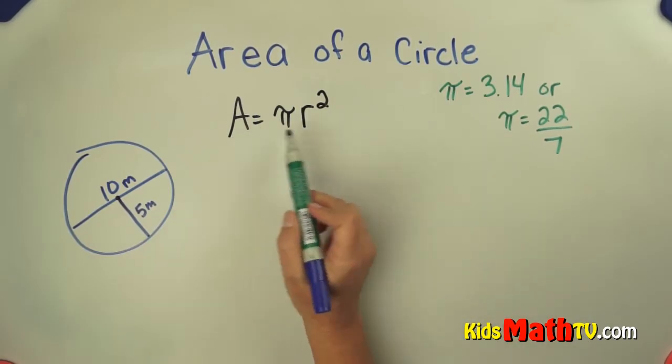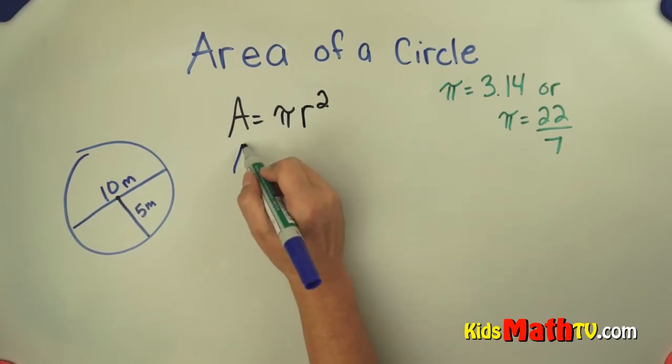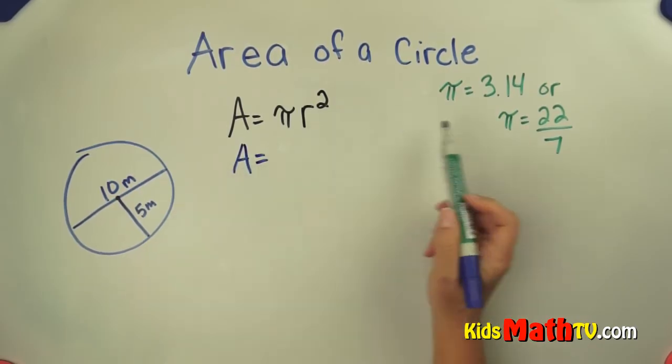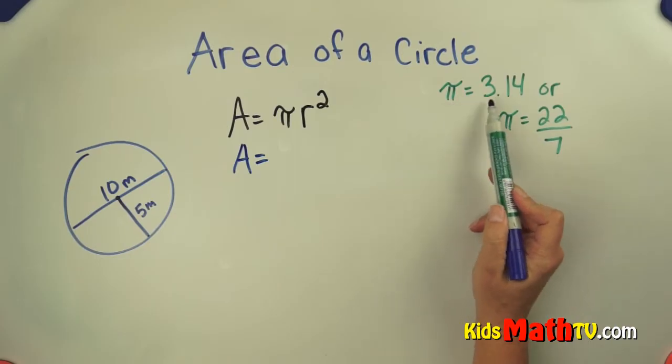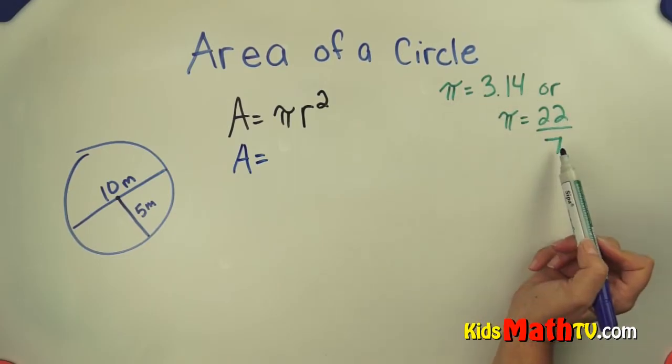Now I'm going to substitute in my values. I don't know the area so keep that A. And for pi I can use either 3.14, a decimal, or 22 over 7.